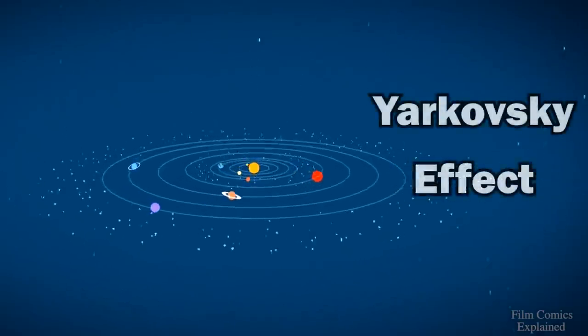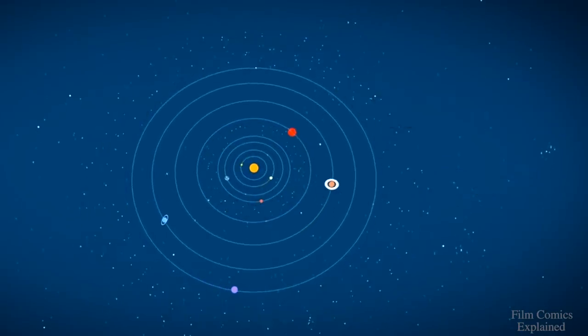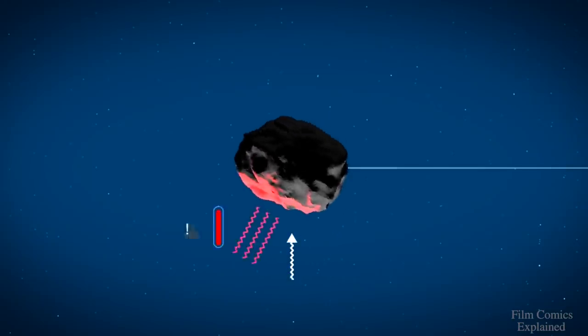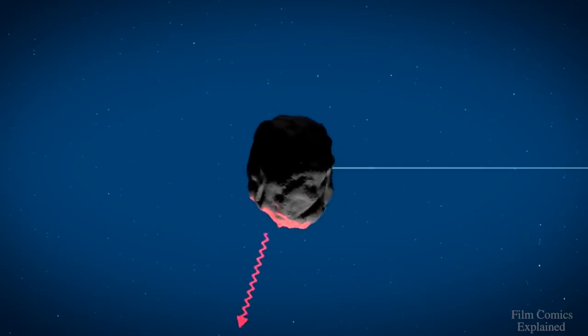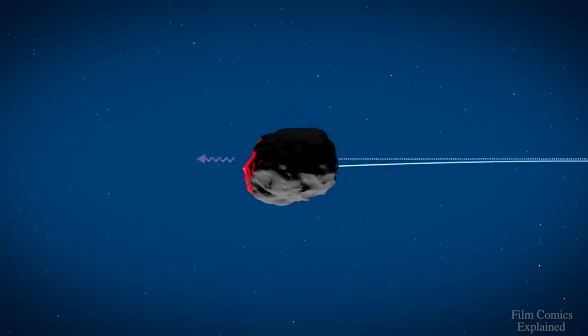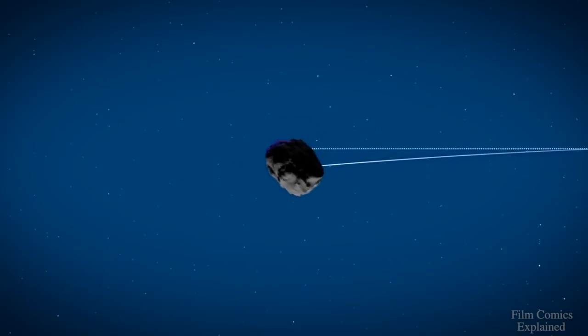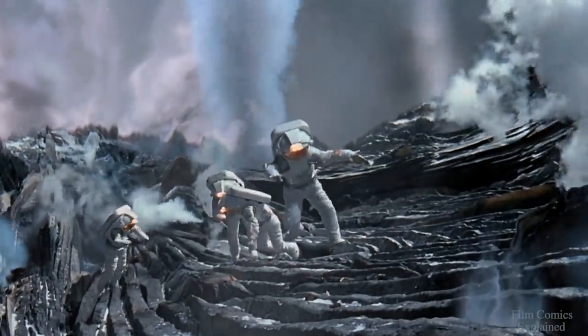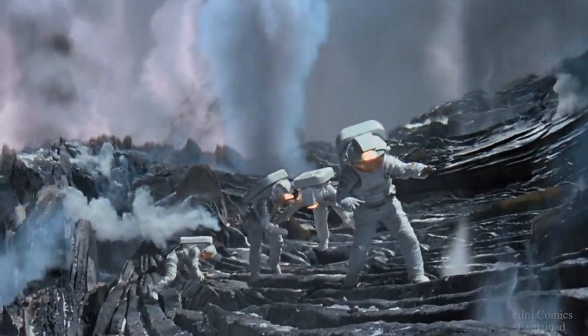We can also employ the Jarkovsky effect to our advantage. Comets rotate as they move along their orbit, just like Earth, and half of it has a day and the other half night, which alternate. As the warm side that is basked in the sunlight moves away from the sun, infrared photons are released, giving the comet a tiny thrust. We actually see the Jarkovsky effect at work in the film, with the release of energy from the comet's temperature change, launching Jon Favreau into space.